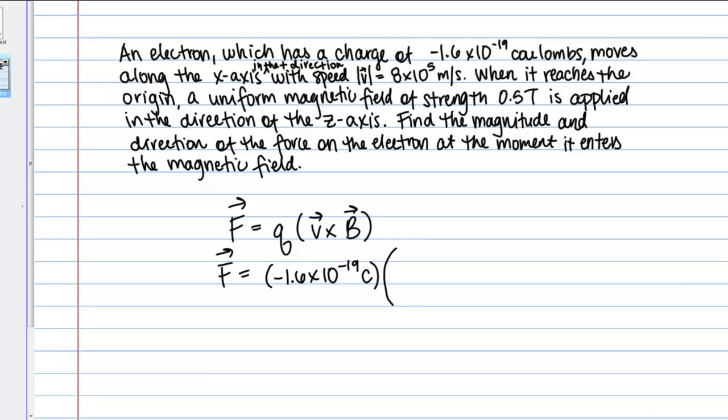The first is vector V, which is the velocity of the charge. We're told its speed, which represents the magnitude of the velocity. We're also told that it's moving along the X axis in the positive direction. So if we wanted to use unit vectors, that would be in the I direction, the positive I direction. I can write my vector then as 8 times 10 to the fifth meters per second I hat.